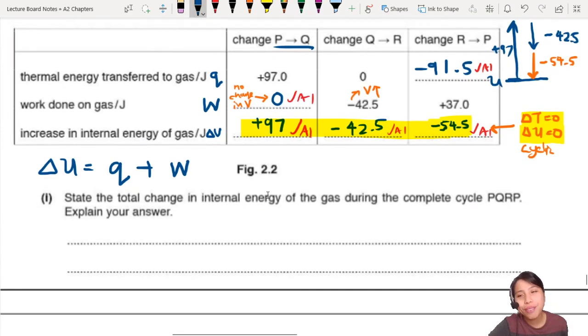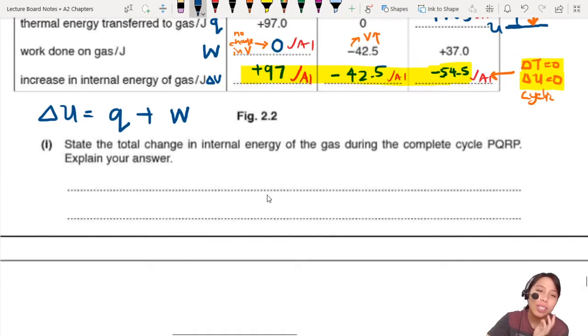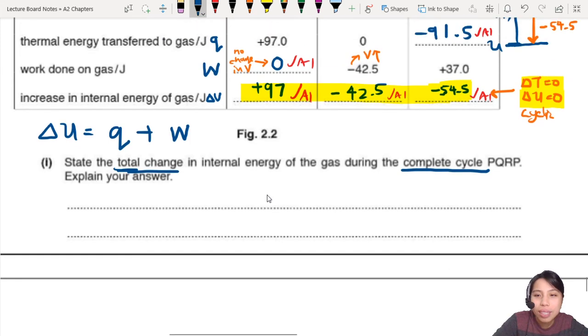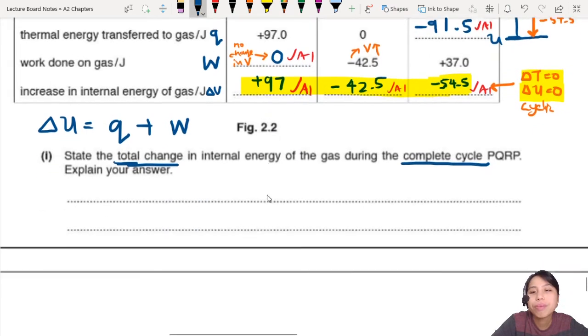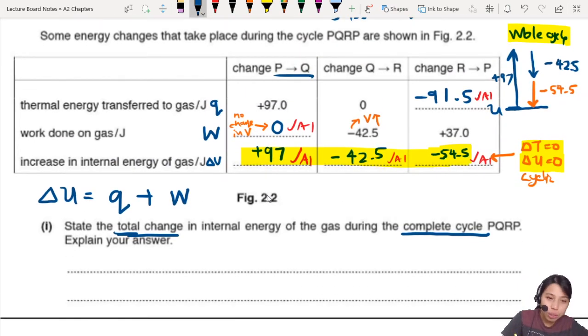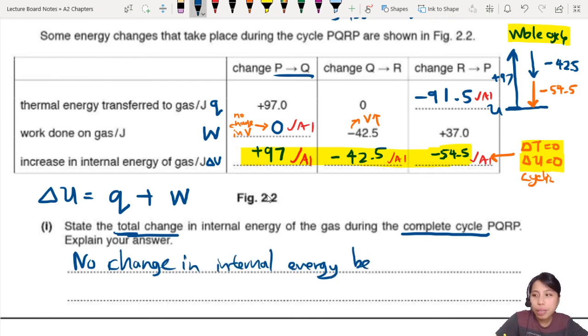Now we go to part one. We already talked about it a little bit. State the total change, total change in internal energy during the complete cycle. This is what we're talking about. So we're looking at the complete cycle. You start there. You go up here. You go down there. And you go back to the original state. What should be the change in internal energy? We said it's zero. Delta U PQRS is zero. So we can say no change in internal energy. That's the first thing. Then you must also say because why? Better to explain. State and explain. So state, no change. Explain why?